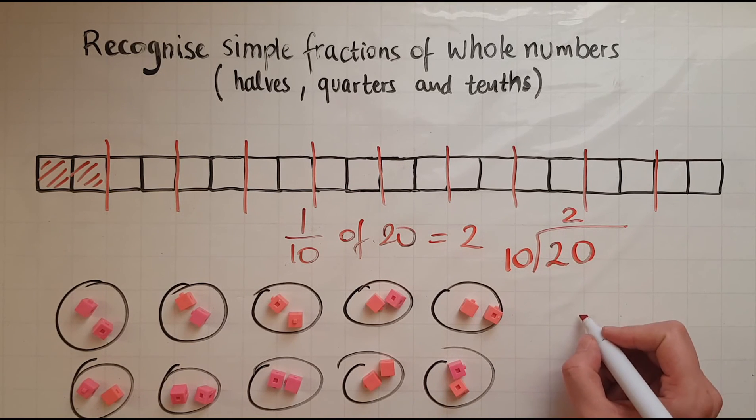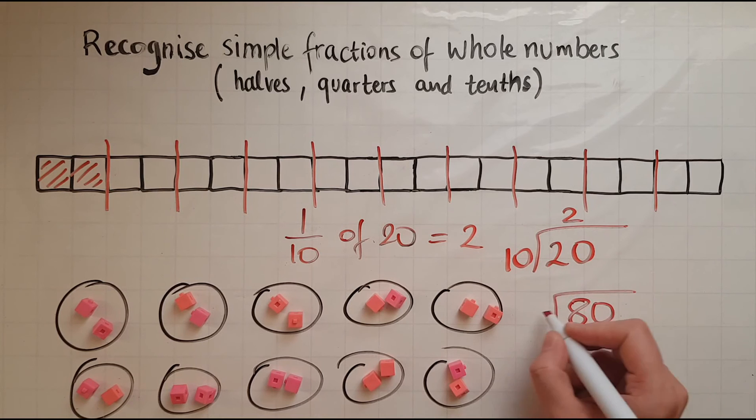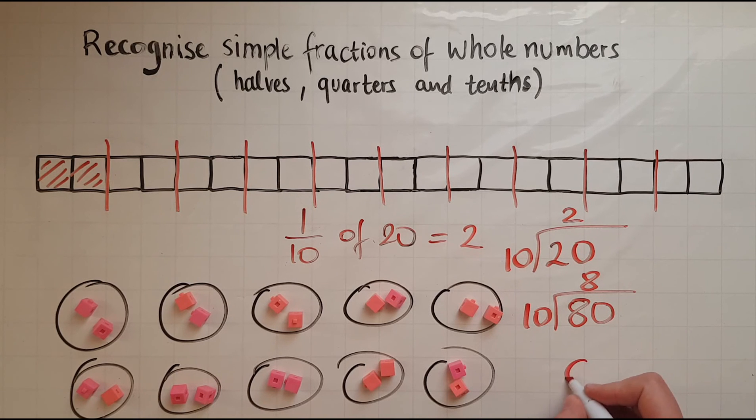Let's have a look at 80. How many 10s would fit into 80? That would be 8 of them. How many 10s would fit into 60? That would be 6 of them. So it's all about dividing the numbers by 10.